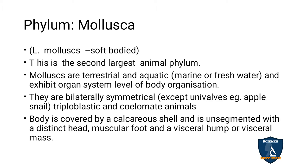Mollusca is the second largest animal phylum. Molluscans are terrestrial — meaning they live on land — or aquatic, meaning they live in marine or fresh water. They have organ system level of body organization, and they are bilaterally symmetric, except in univalves where there is no bilateral symmetry — for example, the pill snail. Bilateral means the body can be cut into two equal halves at one plane. They are triploblastic, with three germ layers: ectoderm, endoderm, and mesoderm.